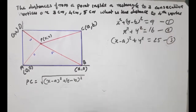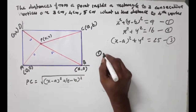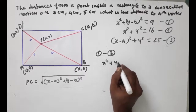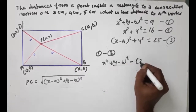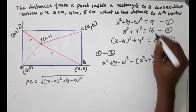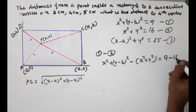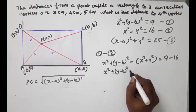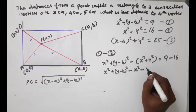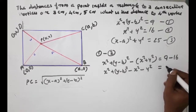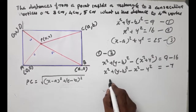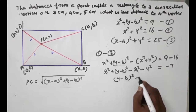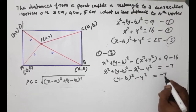I am going to show you equation number 1 minus equation number 2. x squared plus (y minus b) all squared minus (x squared plus y squared) equals 9 minus 16, which is minus 7. So x squared plus (y minus b) all squared minus y squared equals minus 7. That is equation number 4.